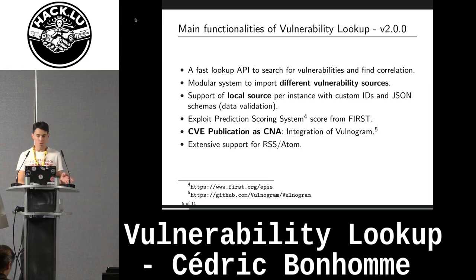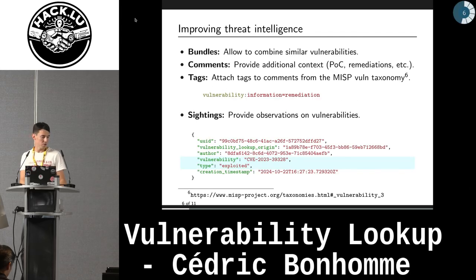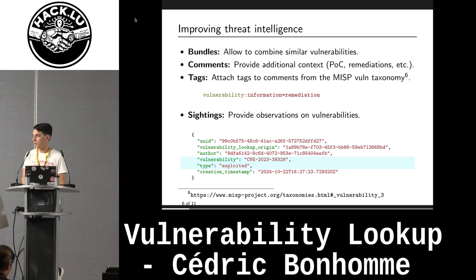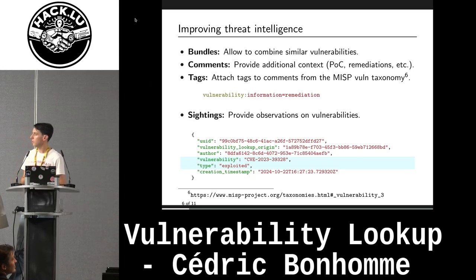We have started to introduce EPSS from FIRST — the Exploit Prediction Scoring System — as a basic introduction, because we would like to have our own models and source code. We have extensive RSS and Atom support across almost all views. A core feature we added recently is community engagement: you are invited to create your own account. Once authenticated, you can add comments and use tags from taxonomy. We use the MISP vulnerability taxonomy for this software, with the goal of being able to pivot between sources collected from MISP and the data collected here.